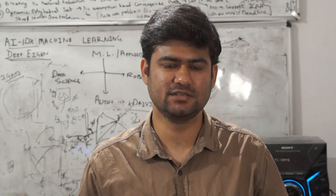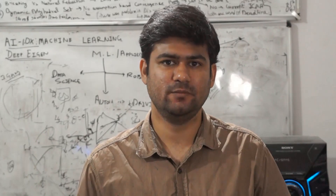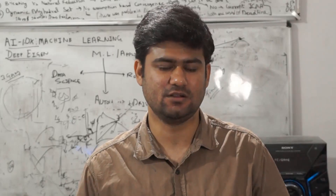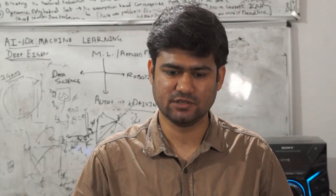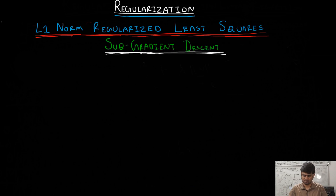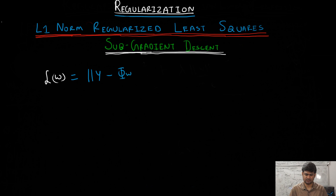In this part of the lecture, we will discuss the subgradient descent algorithm for minimizing the loss function in the L1 norm regularized least squares. The loss function, denoted by L of W, is the L2 norm of Y minus Phi times W, squared, plus lambda times the L1 norm of W.